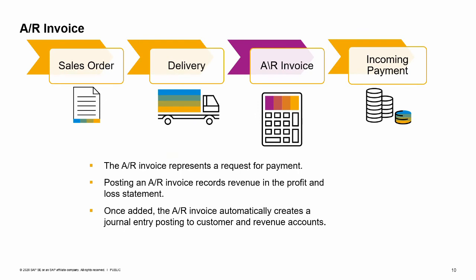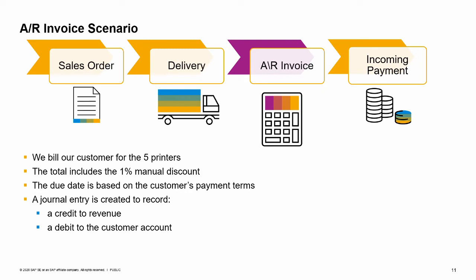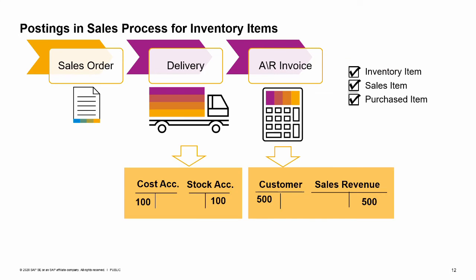An AR invoice is a request for payment. Posting an AR invoice records the revenue in the profit and loss statement. Once added, the AR invoice automatically creates a journal entry posting to the corresponding customer and revenue accounts. In our business example, we have delivered five printers to our customer and now bill the customer for the printers. The total amount was reduced by the 1% discount that the salesperson entered manually. The due date is based on the customer's payment terms, which also include a 2% discount for early payment. When the AR invoice is added, a journal entry is automatically created to record a credit to revenue and a debit to the customer account. The delivery creates a journal entry associated with the sale of goods and the reduction in inventory value, while the AR invoice records the debt owed by the customer and the revenue made from the sale.